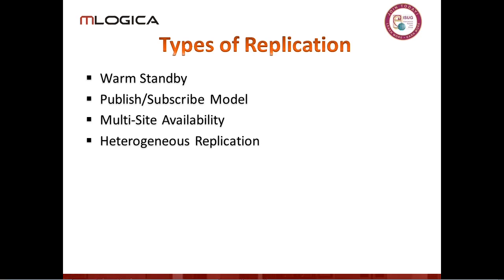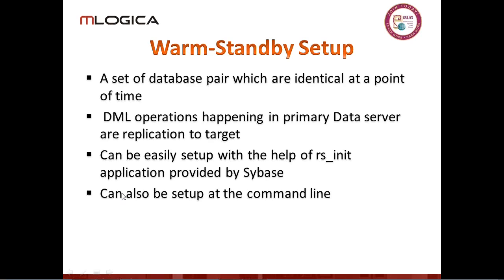We have multiple types of replication. First is warm standby — this is the more common type. The idea is that if our primary fails, we stop performing work on the primary and move over to the secondary. It's called warm standby rather than hot standby because we have to change our connection and make the secondary the primary — there's a step that has to be performed. There's also the publish-subscribe model, which is full-blown multi-directional replication. MSA, multi-site availability, is a subset of publish-subscribe. Heterogeneous replication may go from ASE to IQ to Oracle to DB2 or whatever your target environment is.